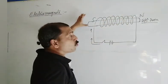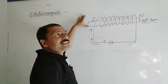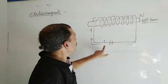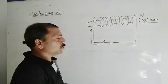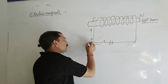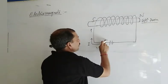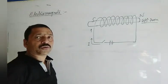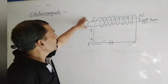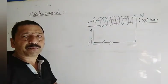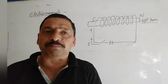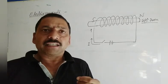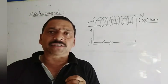We call this an electromagnet. We call it an electromagnet because the magnet works only as long as the electric current is flowing in the circuit. As soon as we switch it off, the electric current stops flowing and immediately the soft iron core rod becomes a simple rod — its magnetism completely disappears. That is why an electromagnet is a temporary magnet.